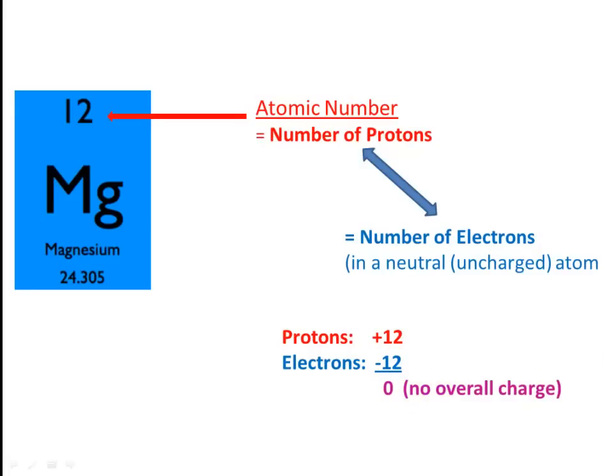So you can remember that in any element that you see on the periodic table, or any atom that is uncharged, the number of Protons will always be the same as the number of Electrons. And we find out the number of Protons by looking at the Atomic Number.